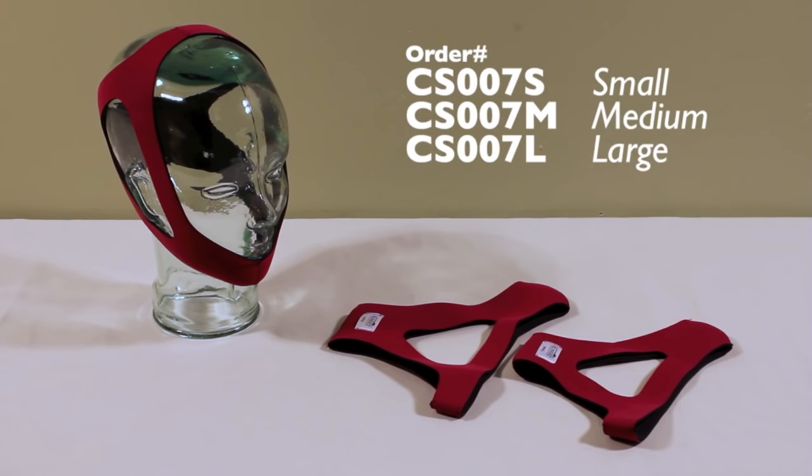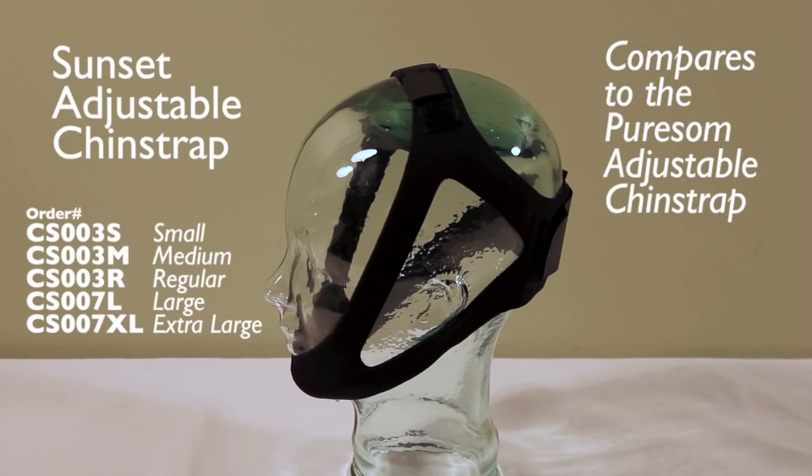These are fixed sizes as opposed to the Sunset adjustable chin strap order number CS003 which compares to the PureSOM ruby adjustable chin strap. It has 5 sizes and can be adjusted with velcro tabs across the top of the head and across the back of the head.